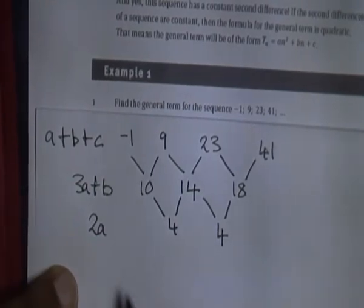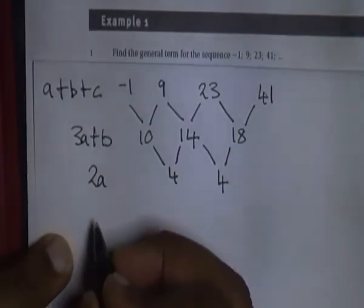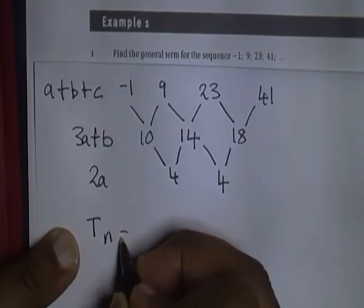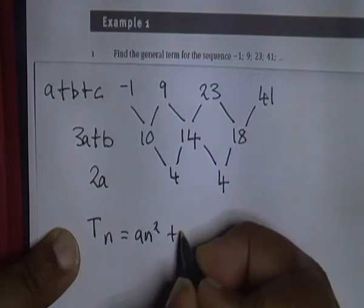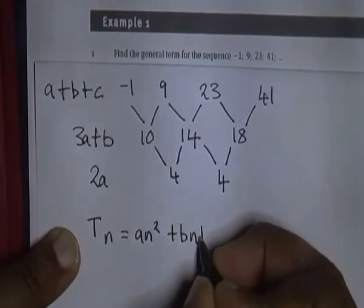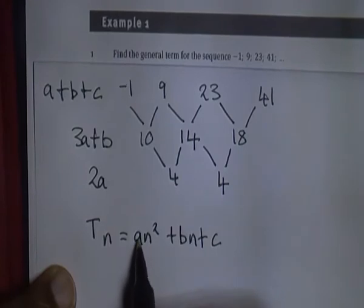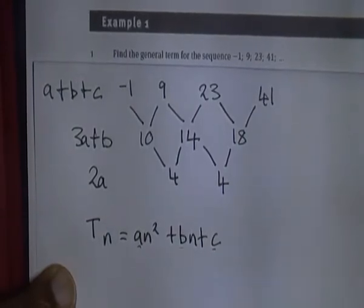Our sequence is a quadratic sequence, which means the general form is a quadratic equation. It's an equation of the form AN squared plus BN plus C. So what you need to work out is the value of A, the value of B, and the value of C.